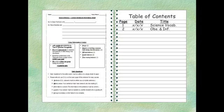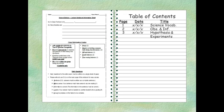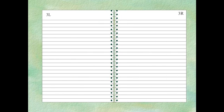At this point in time, this is what your table of contents should look like. We've got pages one and two with some notes on already, and so we're going to be adding today's information on page three. This will go on the right-hand side and will be on hypotheses and experiments. Don't forget to number your pages 3R and 3L, and also include a date and a title, which would be hypotheses and experiments.